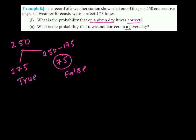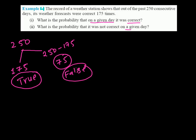Here we have to find out the probability that on a certain day, whether the forecast is true or false. That means whether their prediction — their forecast — is going to be true or false on that day. That is the probability we need to find in this problem.